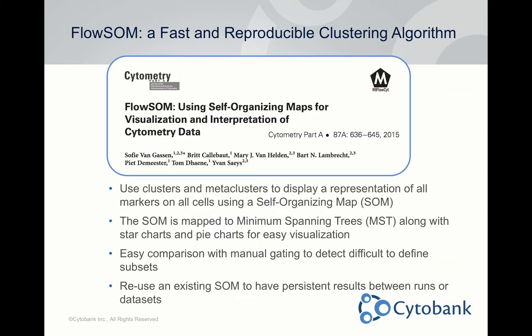Today we're focused on FlowSOM. If you haven't read the paper, I'd recommend it — it describes how FlowSOM works. FlowSOM is a clustering algorithm similar in principle to SPADE, but with key differences. It uses self-organizing maps, which gives you a reproducible way to map the same cells to the same locations on your tree. You can also set a seed, which I'll explain shortly, making analyses very reproducible.